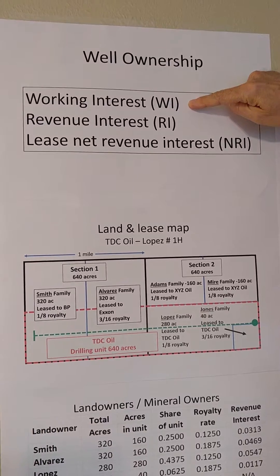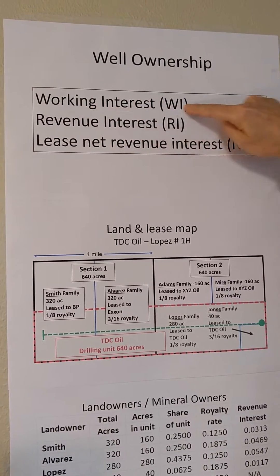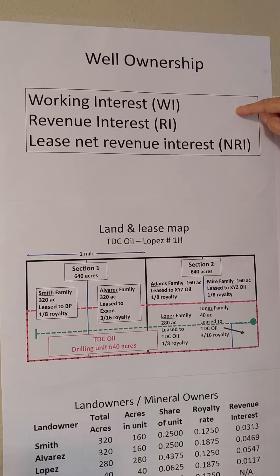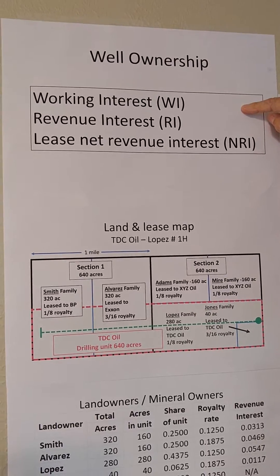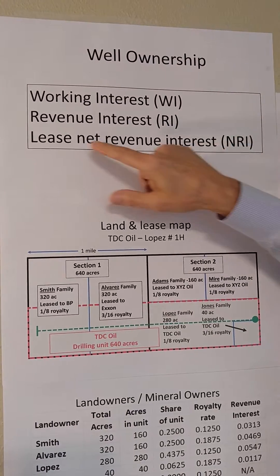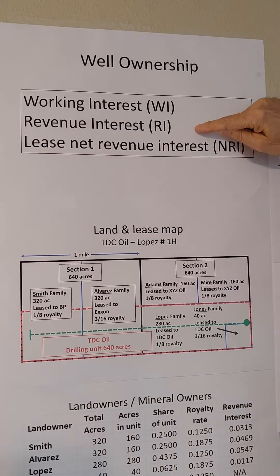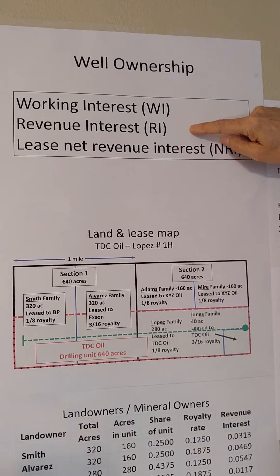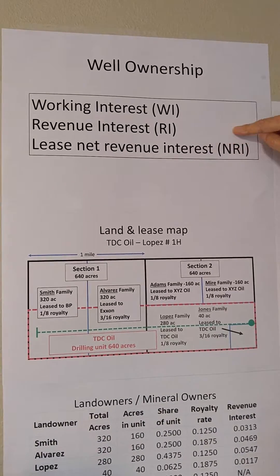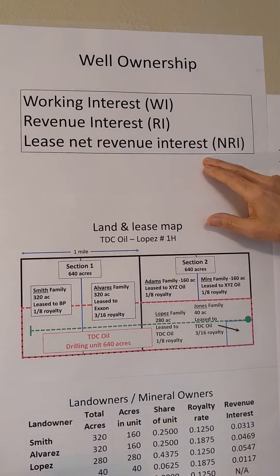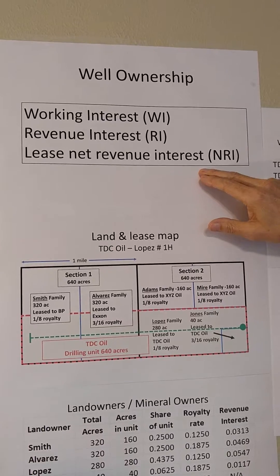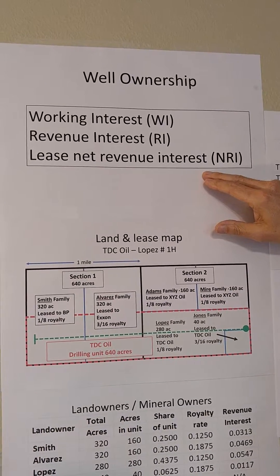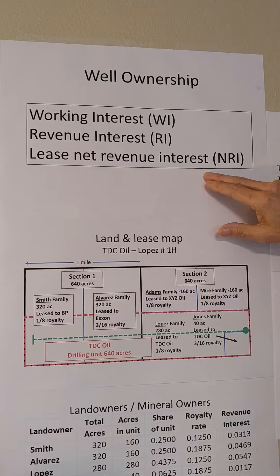The first one is working interest — that's what share of the well you're paying for, what share of the expenses, drilling and operating costs. The revenue interest is what share of the revenue you're going to get when you sell the oil and gas. The lease net revenue is the revenue on a lease that's left over after you pay the landowners or the mineral owners their royalty.